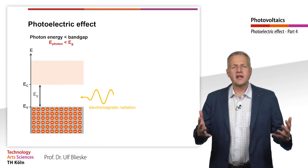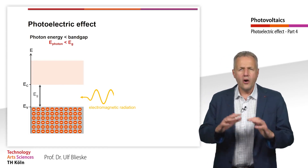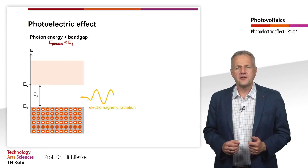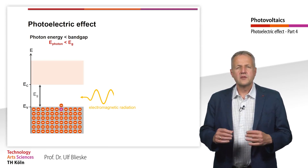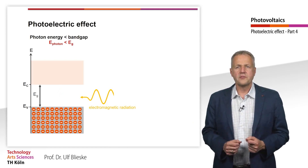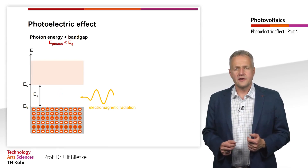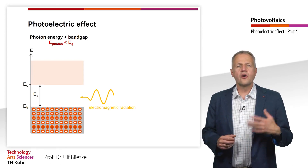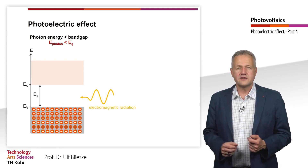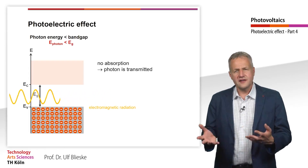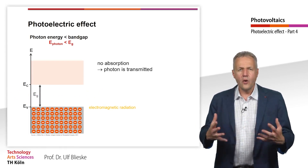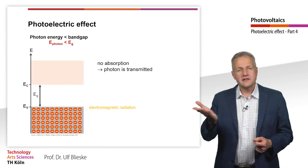When electromagnetic radiation with a photon energy smaller than the band gap hits the semiconductor, no absorption of the radiation takes place. The process of lifting an electron to the center of the band gap does not occur, because there are no allowed states here. This process is shown here only for didactical reasons — it does not exist in reality. So the photon does not give its energy to the electron. The electromagnetic radiation has no interaction with the semiconductor; the light is transmitted.